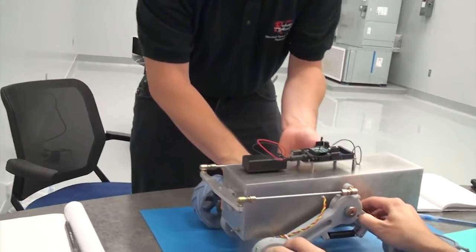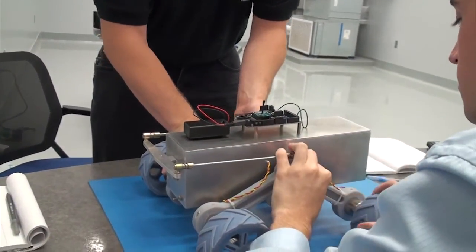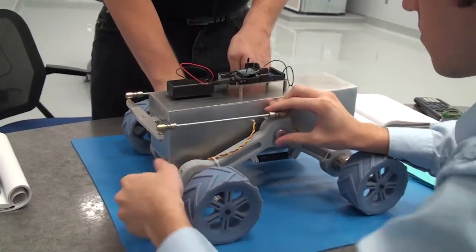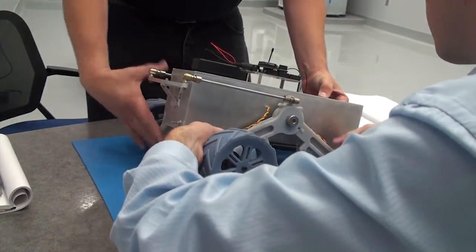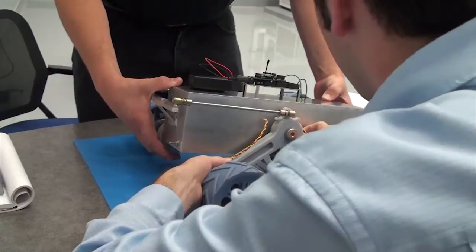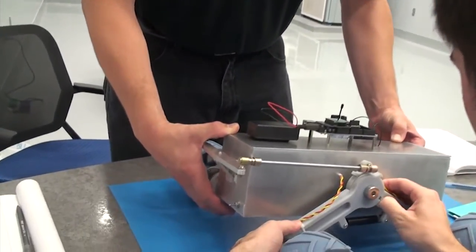So what we're doing is we're just pulling the tabs and releasing the locking mechanism. And then we're going to rotate the arms up. Technical difficulties.